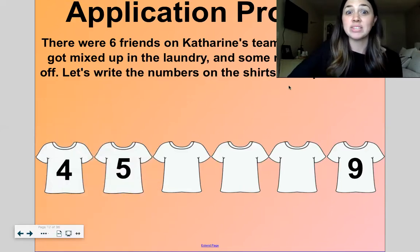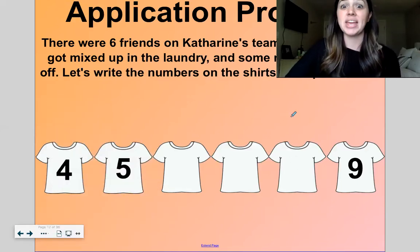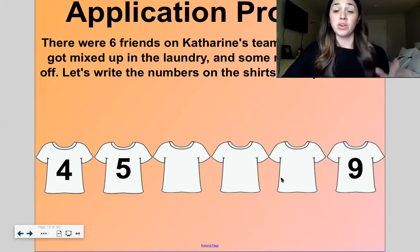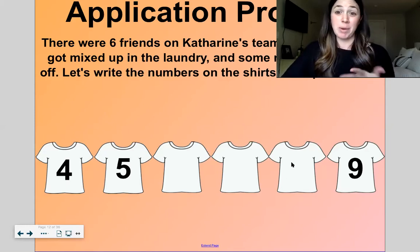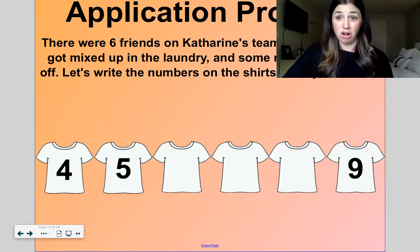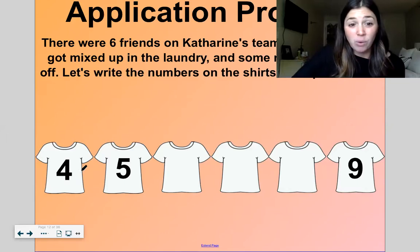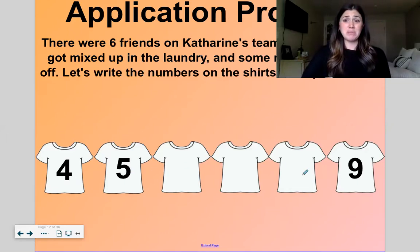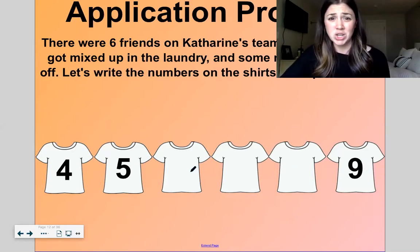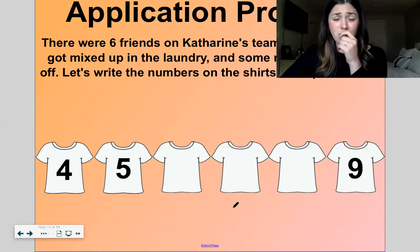Okay. Let's get into our application problem. So there were six friends on a team and their uniforms got mixed up in the laundry, just like you guys wear uniforms to school, right? Their uniforms got mixed up in the laundry. Now on this team's uniforms, they have numbers on the back of their uniforms and some of the numbers washed off. So I see four, five, then I see three blank ones, and I see the number nine. So which ones got washed off?